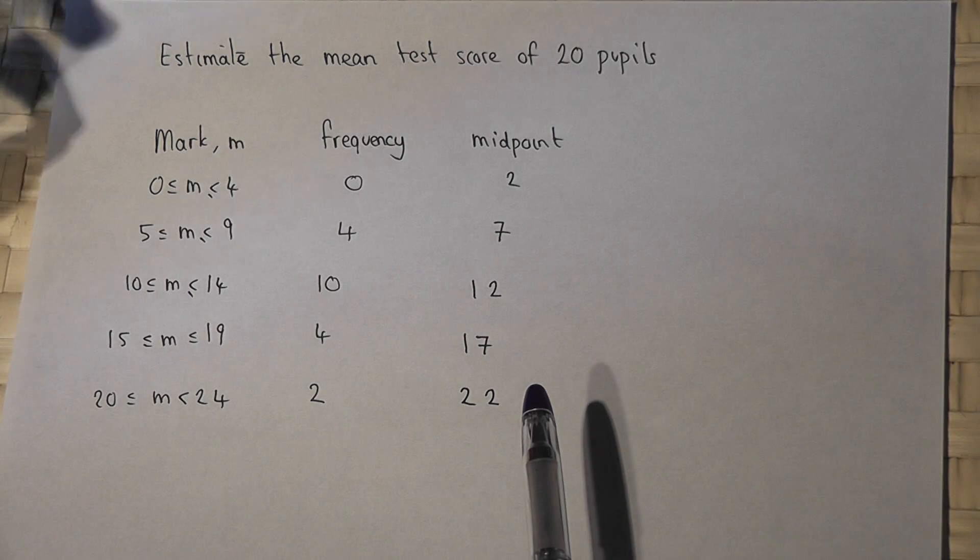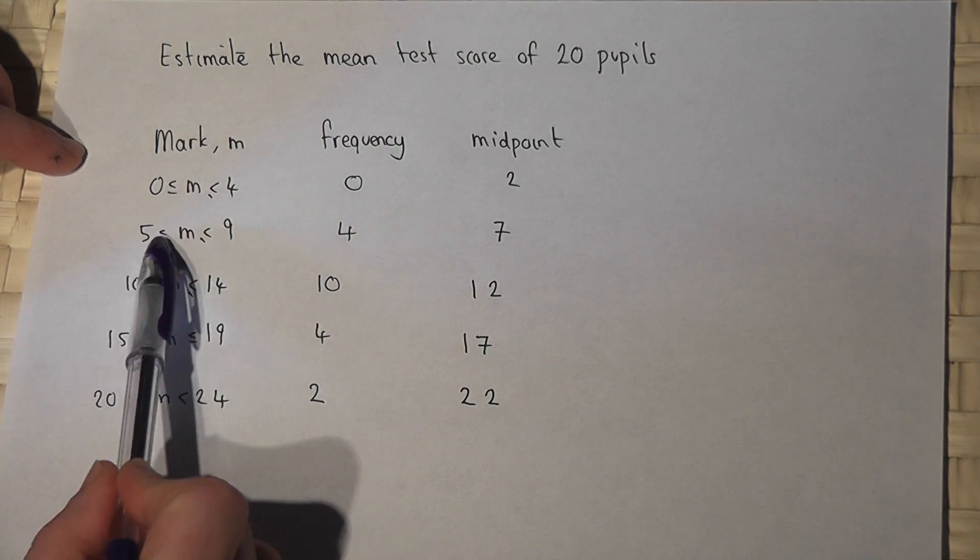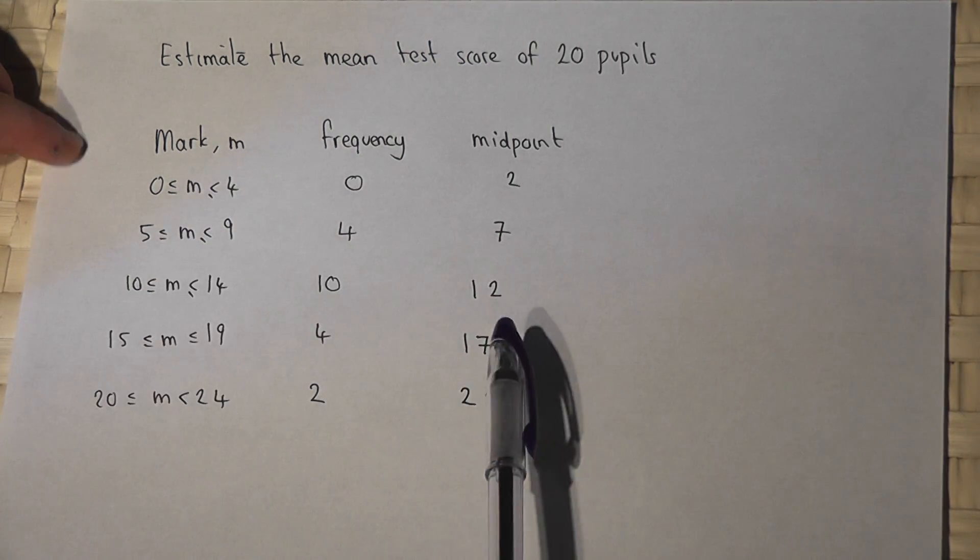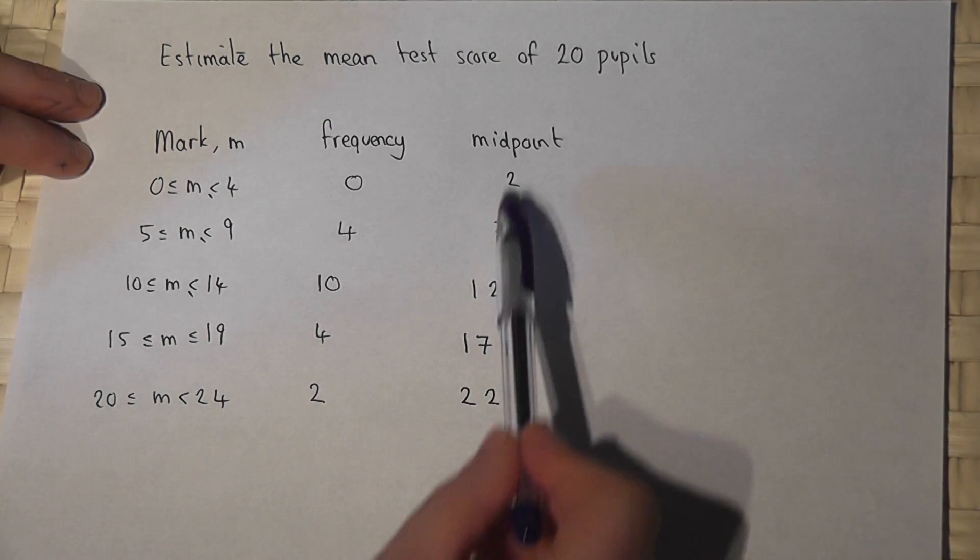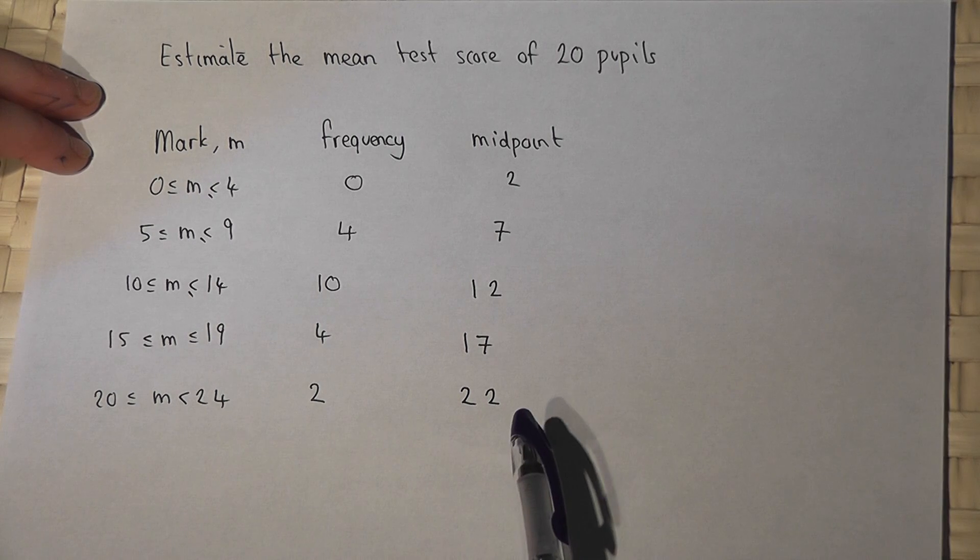So we estimate an exact value for the spread of scores. We've actually lost all the individual test scores and use an estimate for what those test scores probably were.